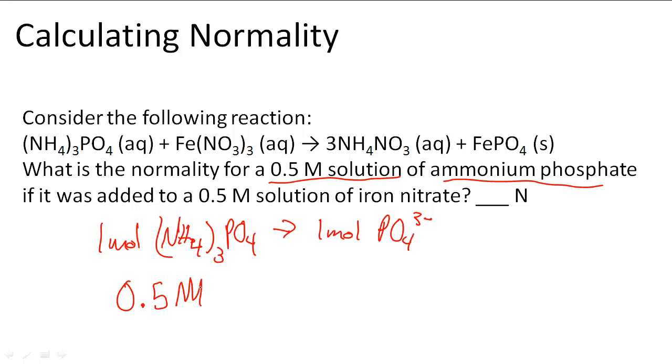If we were to try to find out the amount of ammonium phosphate, all I would have to do is multiply this molarity times liters. So when I multiply them times liters, let's say one liter, I'm going to get 0.5 moles.